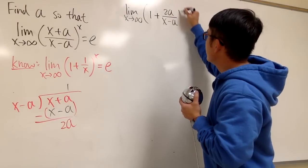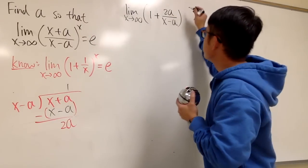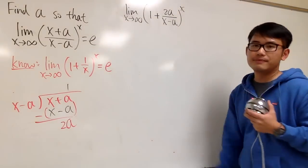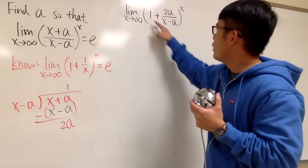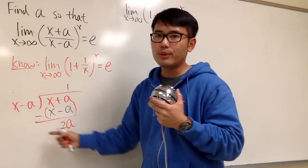So we add 2a over the original denominator, which is the x minus a. And this is still raised to the x power. And once again, all I did was change the inside by doing some long division.